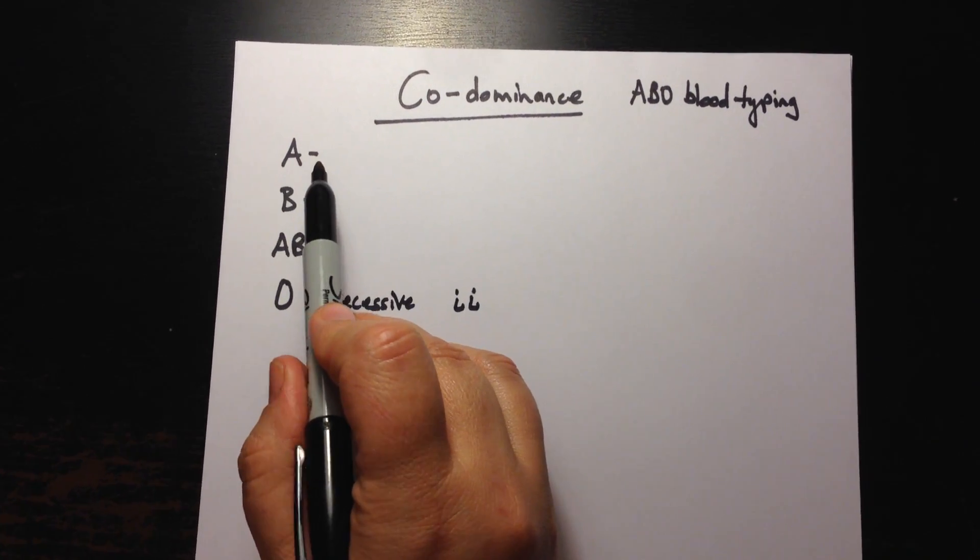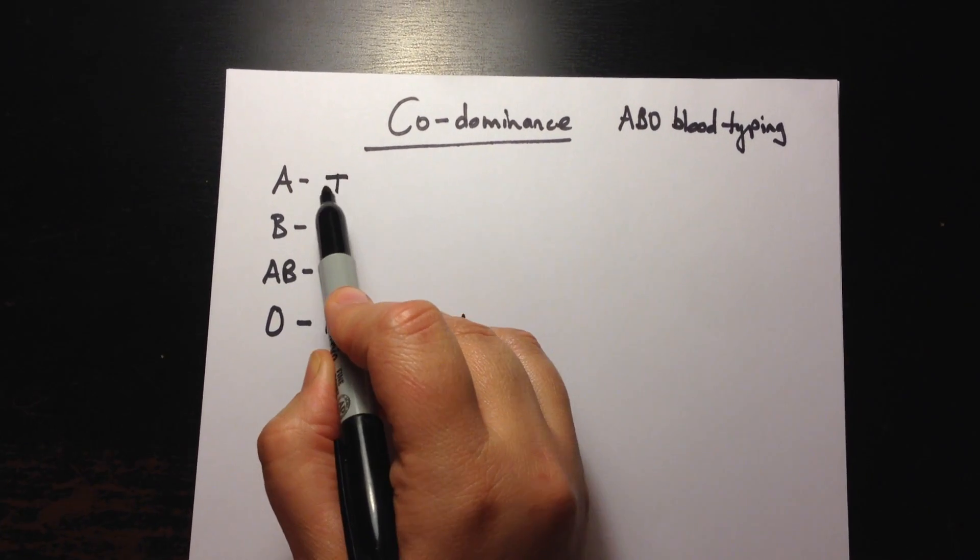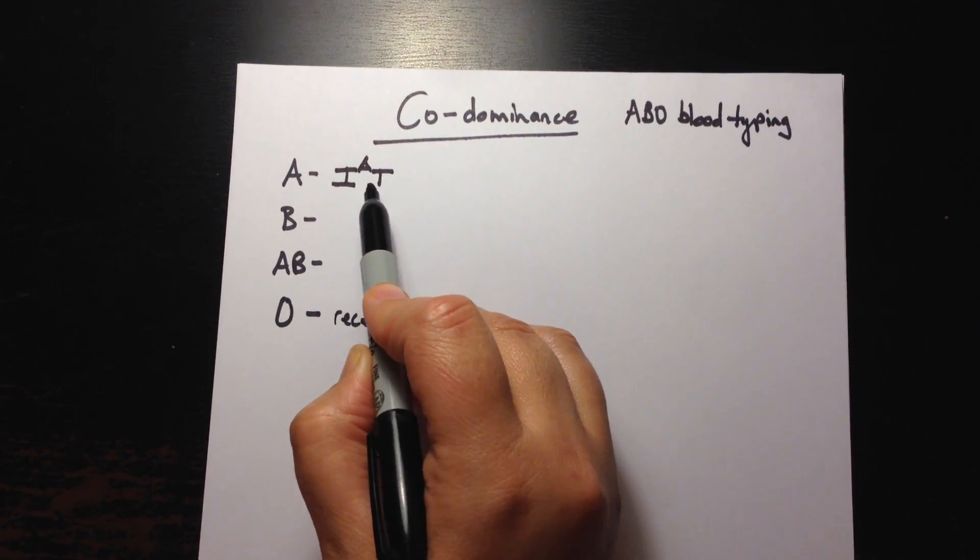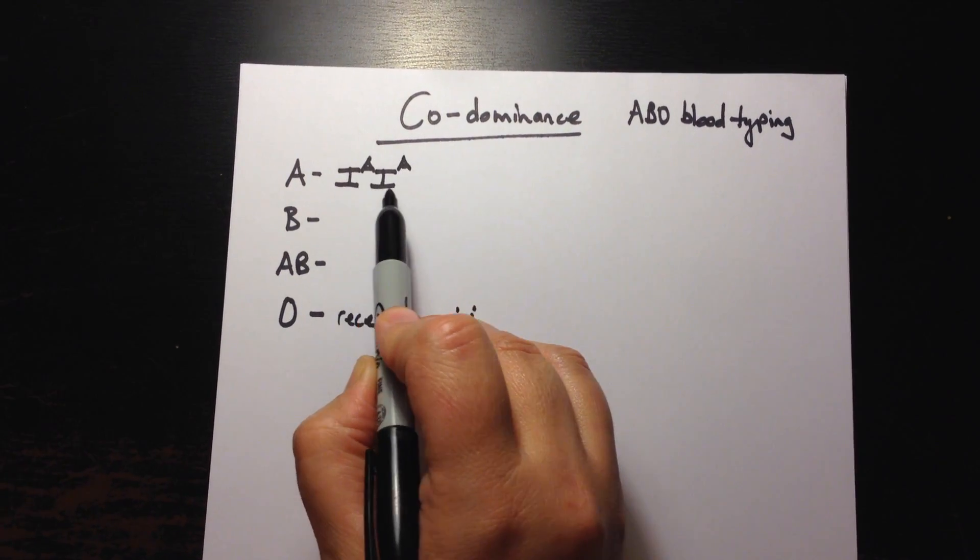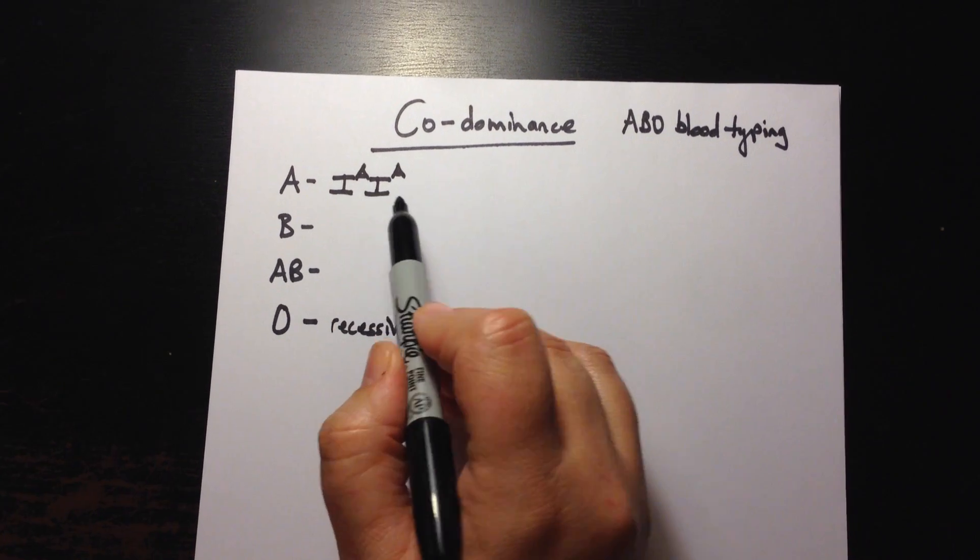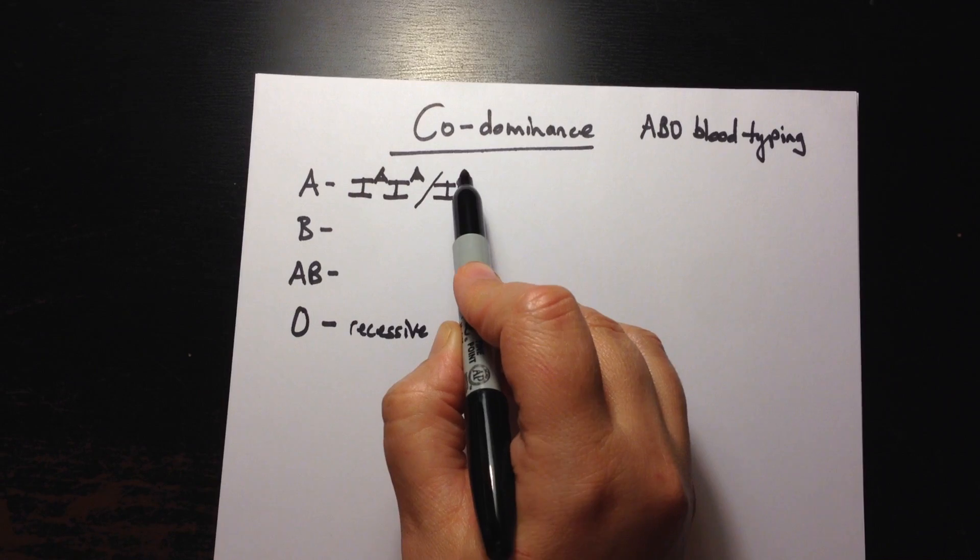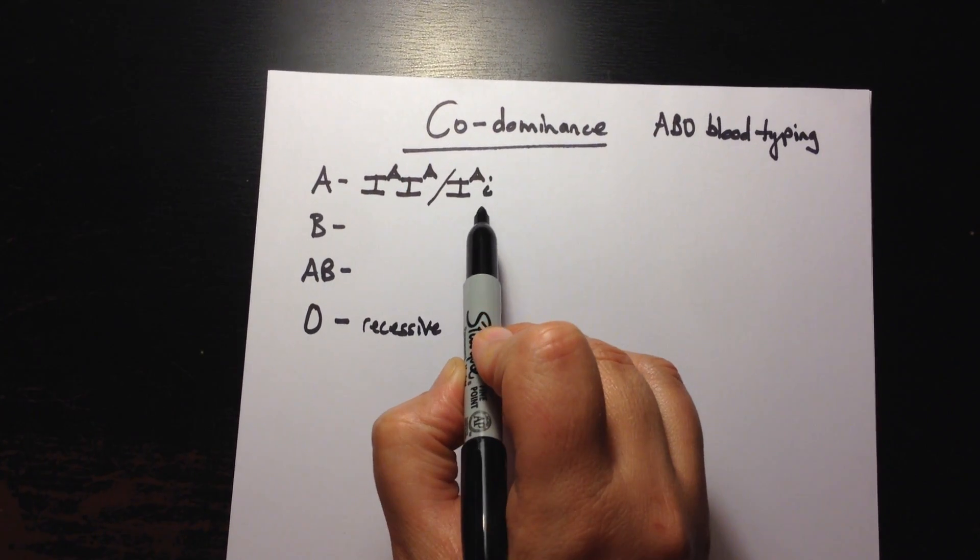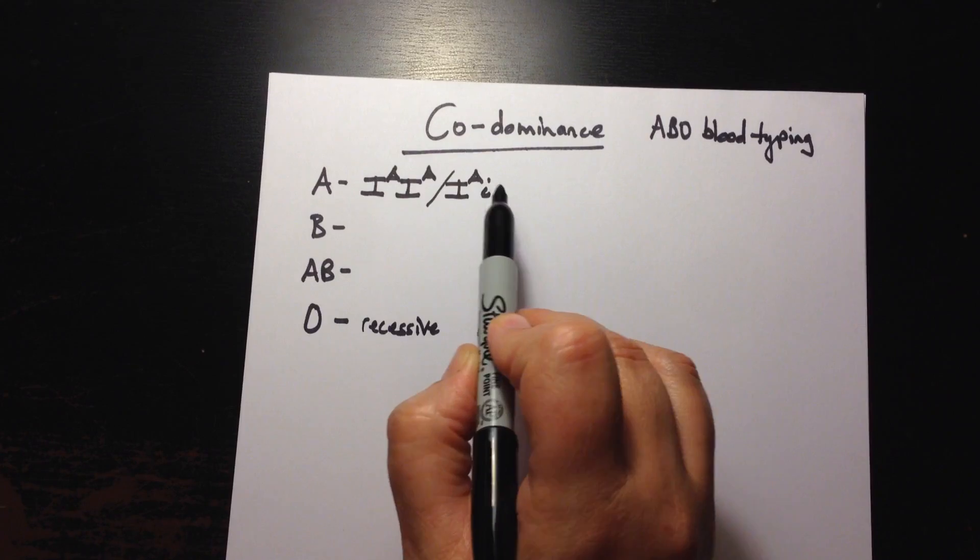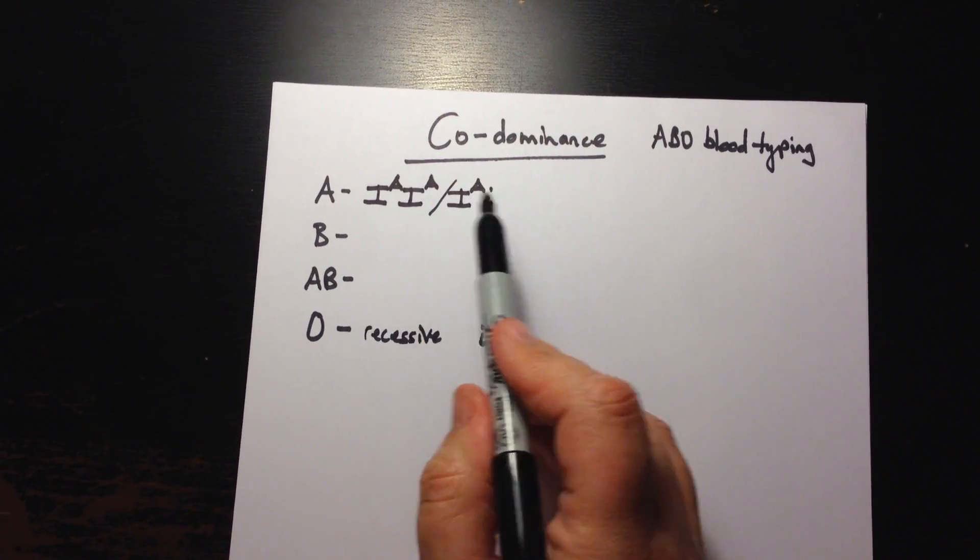In type A blood we write the genotype for that blood as I^A because it is a dominant allele, two of them or we can have this type of type A blood, one dominant allele with one recessive allele but both of those is considered type A blood.